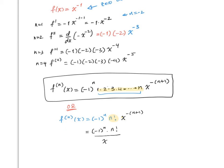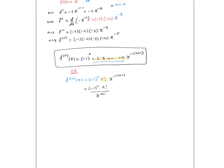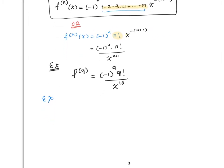So for this particular function, if you want to find the ninth derivative, it will be equals to negative 1 to the 9, times 9 factorial, divided by x to the 10, and that's it. Now if you are looking for a challenge, try this question: let f(x) equal the square root of x, and try to find a formula for the nth derivative.